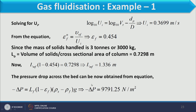The pressure drop across the column is calculated using the expression derived in the first lecture of this week. Substituting all values gives a pressure drop of 0.979 kN/m².